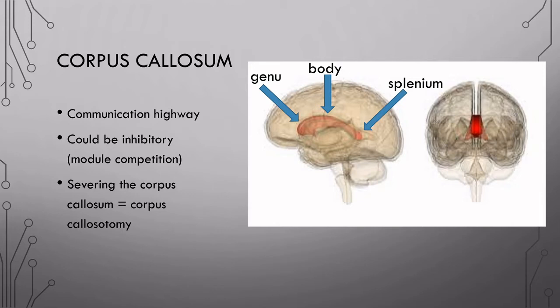We've talked a bit now about what happens when we split the corpus callosum, but let's make sure we know what it is exactly. So the corpus callosum is made up of about 250 million axonal fibers. It's the largest white matter structure that connects the two hemispheres together.